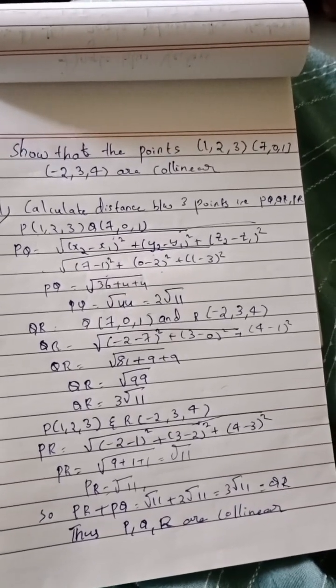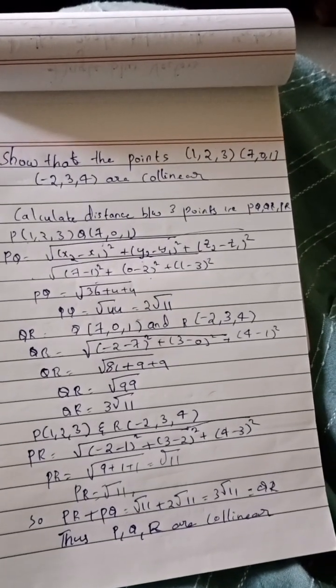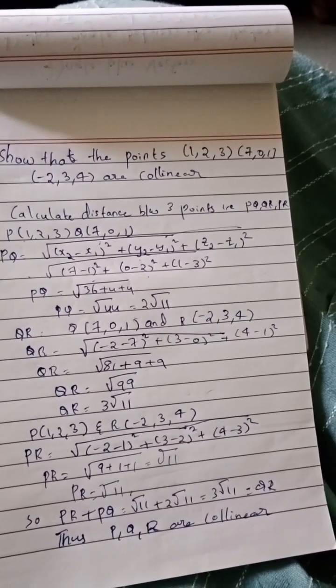We have to follow the same process for QR. That will be root of 81 plus 9 plus 9, which is root 99. QR will be 3 root 11.